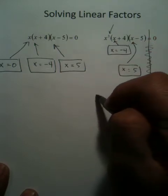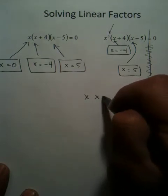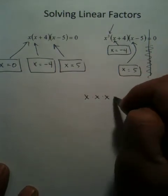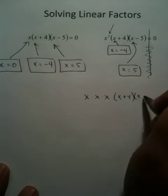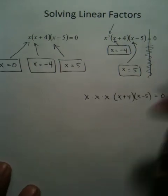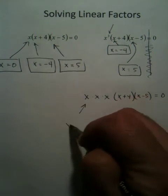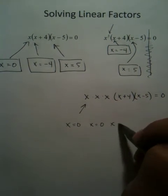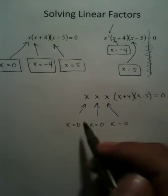What it really says is that you have x times x times x times x plus 4 times x minus 5 equals 0. So technically, you have x equals 0 three times in the answer.